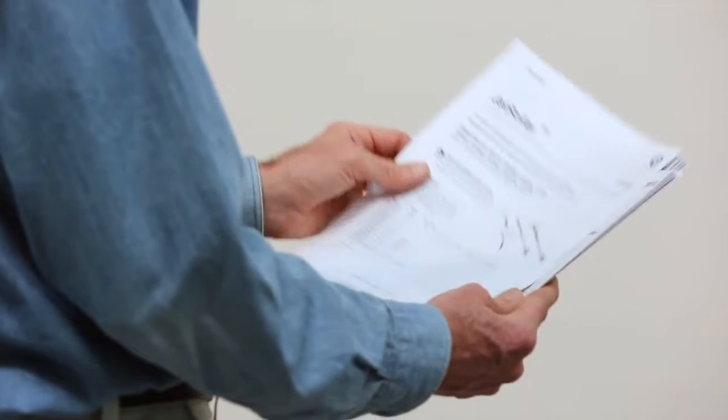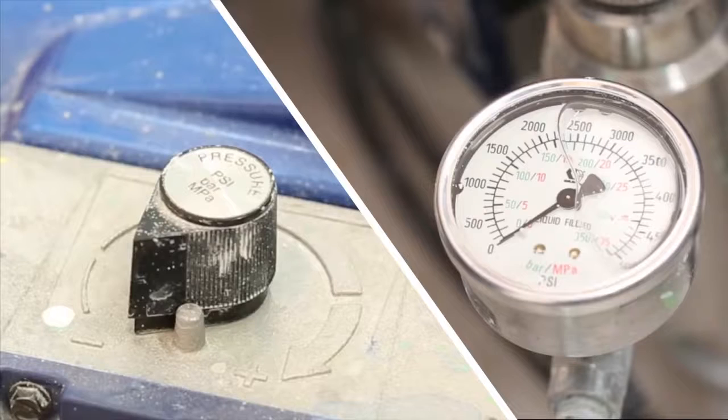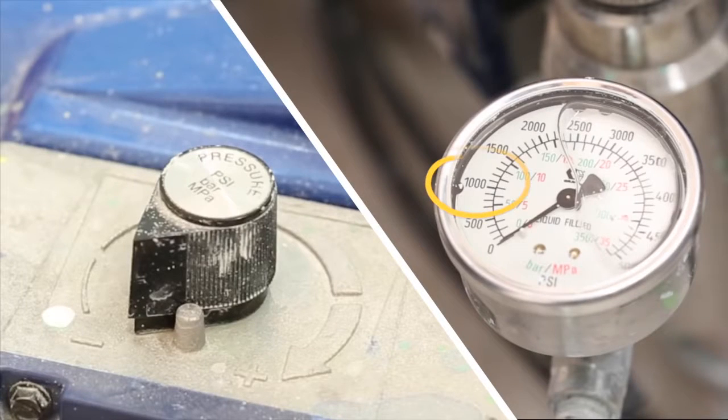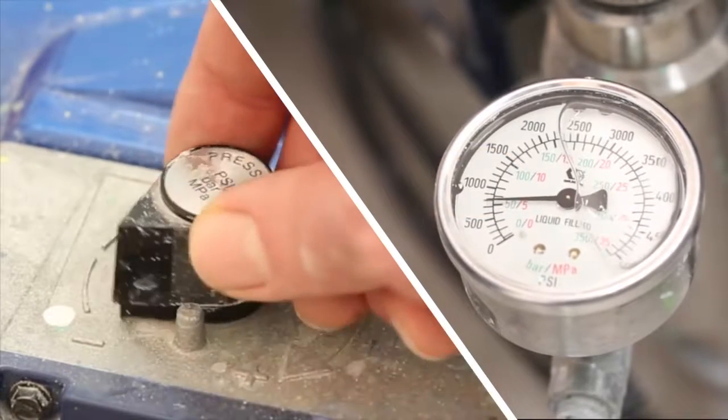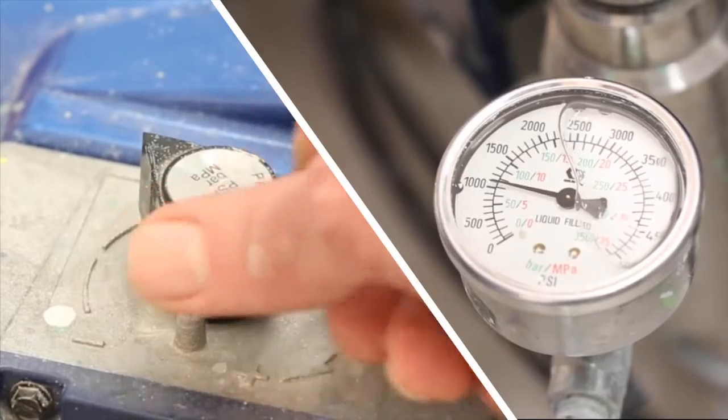Always set up your airless sprayer according to its manual. To minimize overspray, adjust the pressure to about 1000 PSI. If you don't have a pressure gauge on your sprayer, set the pressure knob about one-third of the way up.